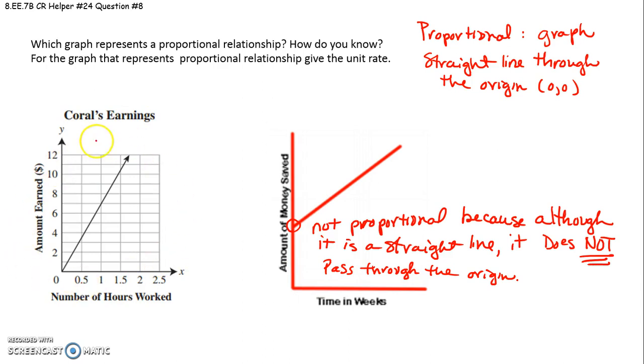Coral's earnings, on the other hand, is a proportional relationship. The graph is a straight line through the origin. It's a straight line through zero, zero. That's totally a proportional relationship. Therefore, we can find the unit rate.